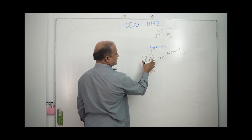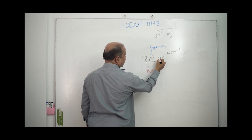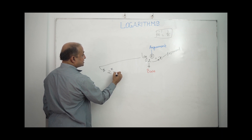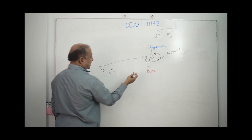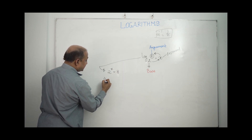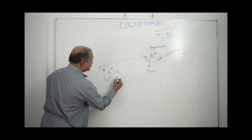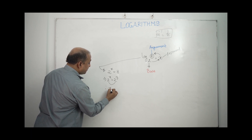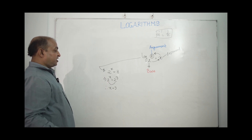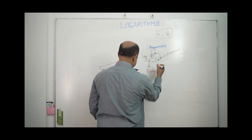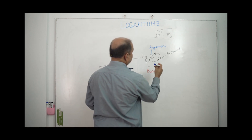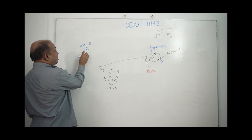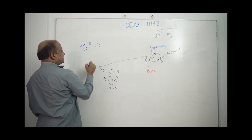Converting the log equation to exponential form: 2 to the power x equals the argument, which is 8. So 2 to the power x equals 8, which is 2 cubed. Therefore x equals 3. So log base 2 of 8 equals 3.